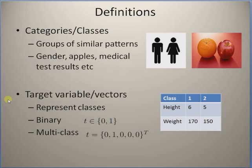The next definition is the concept of categories, classes, or groups. These are basically the groups of similar regularities or similar patterns. For example, human beings can be grouped into men and women, that is male and female.